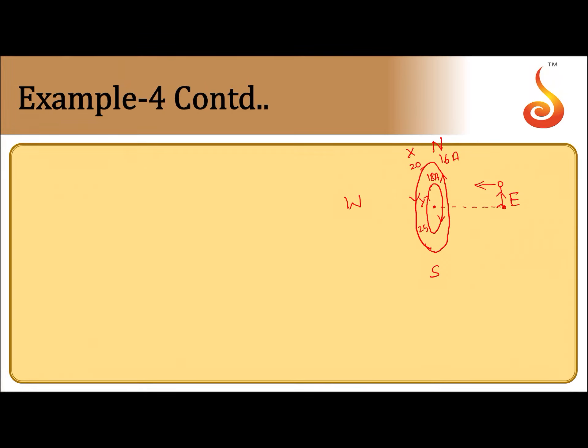See, obviously field due to Y will be greater because it is nearer, current is more, number of turns is more, and radius is less. So net field at the center will be due to the coil Y minus field due to coil X.